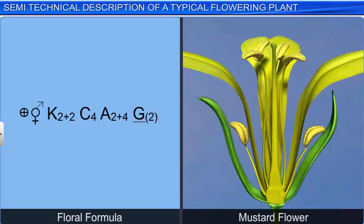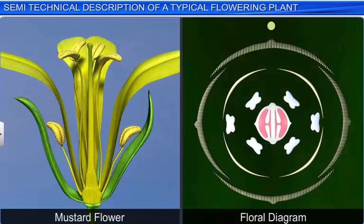The floral formula of a flower is usually accompanied by its floral diagram. The floral diagram is a graphical representation of the cross section of a flower and provides information about the different parts of a flower, their arrangement, and the relationships between these parts.